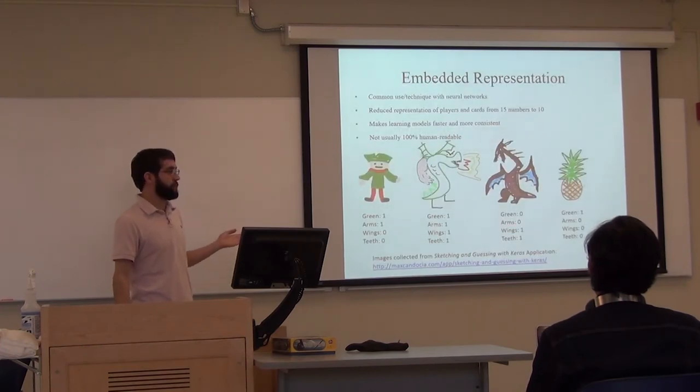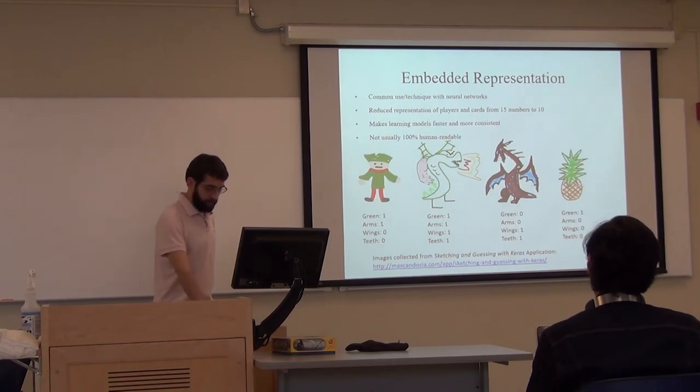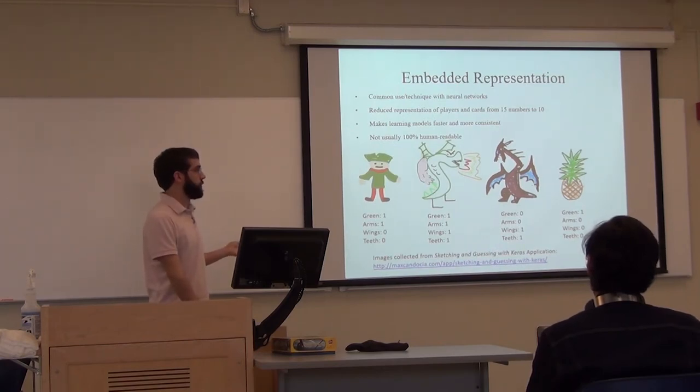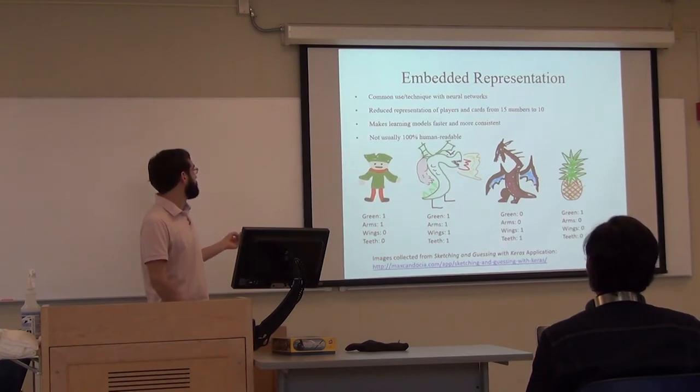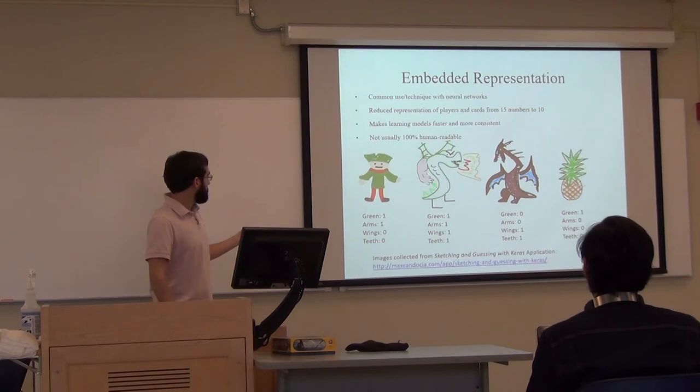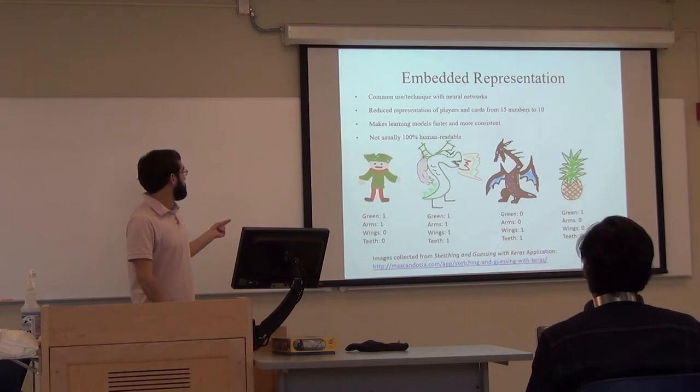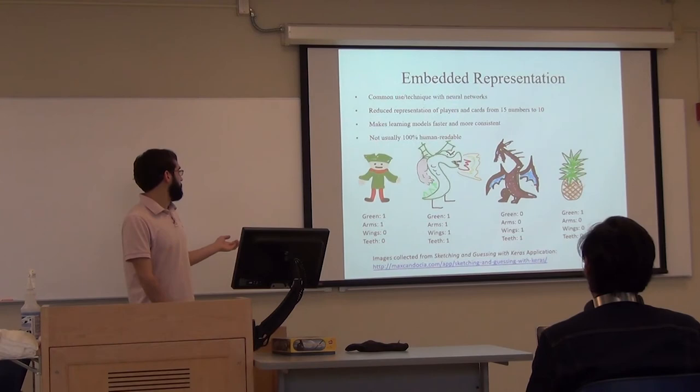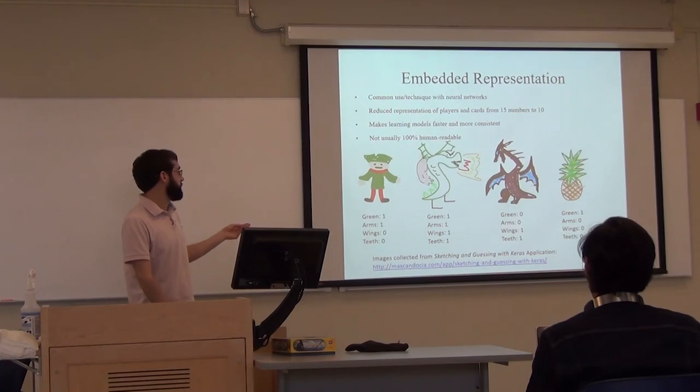With the embedded representation, I thought this was kind of a fun little thing that you can do that's relatively common with images - you can represent different images as just a few numbers. I got some images, I think I actually drew all of these on my iPad. You can represent these images as four different factors. Do they have: are they green, do they have arms, do they have wings, and do they have teeth. You have, like, an elf. This is green, has arms. Then you have a dragon that also has arms, so it's green, arms and wings. Then another dragon, but with just wings and teeth. And then a pineapple, so it's green.